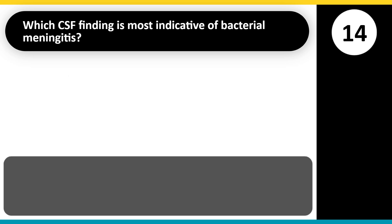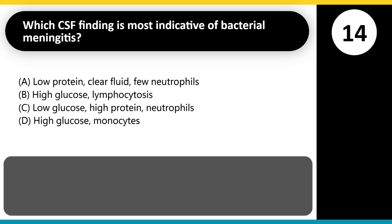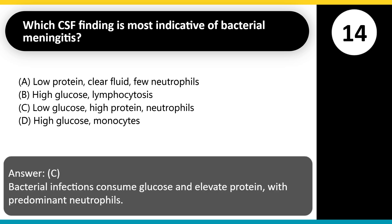Which CSF finding is most indicative of bacterial meningitis? A. Low protein, clear fluid, few neutrophils. B. High glucose, lymphocytosis. C. Low glucose, high protein, neutrophils. D. High glucose, monocytes. Answer: C. Bacterial infections consume glucose and elevate protein, with predominant neutrophils.